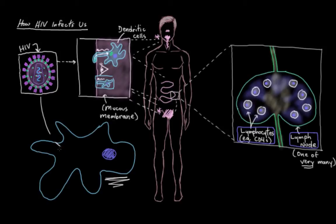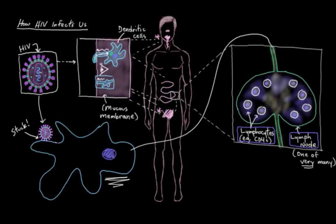One way is by what's called an infectious synapse, where the dendritic cell essentially grabs onto HIV particles using its plasma membrane and a protein on its plasma membrane, and it carries them to the lymph node. Then it sort of hands off the little HIV particle to a T cell to deal with, which usually results in that T cell becoming infected.